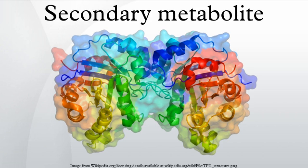Secondary metabolites are organic compounds that are not directly involved in the normal growth, development, or reproduction of an organism. Unlike primary metabolites, absence of secondary metabolites does not result in immediate death, but rather in long-term impairment of the organism's survivability, fecundity, or aesthetics, or perhaps in no significant change at all. Secondary metabolites are often restricted to a narrow set of species within a phylogenetic group.